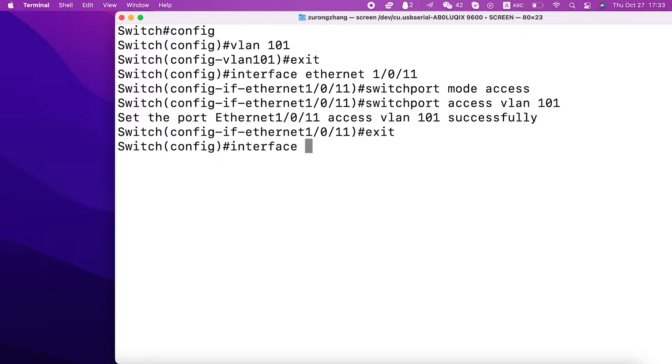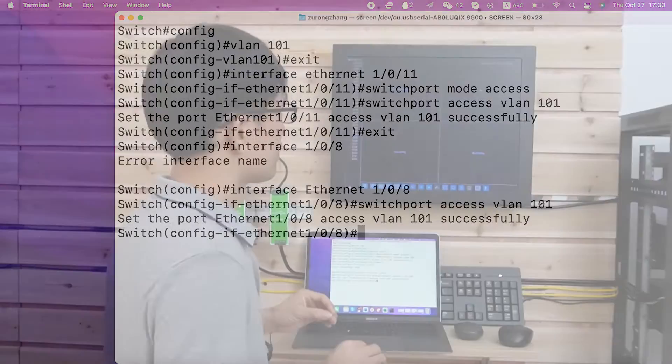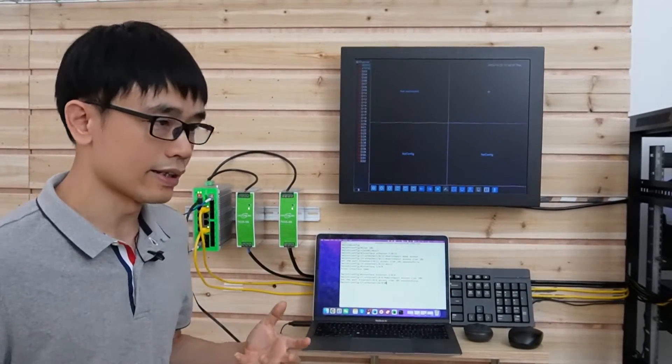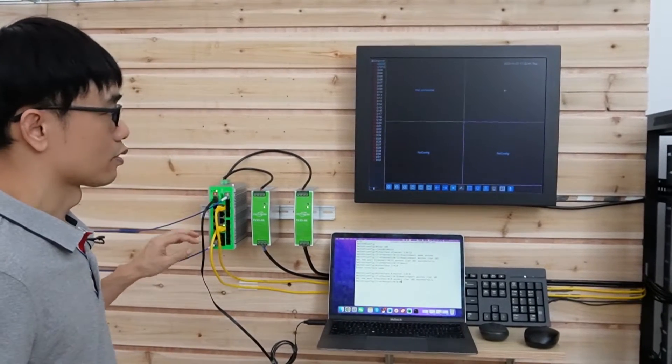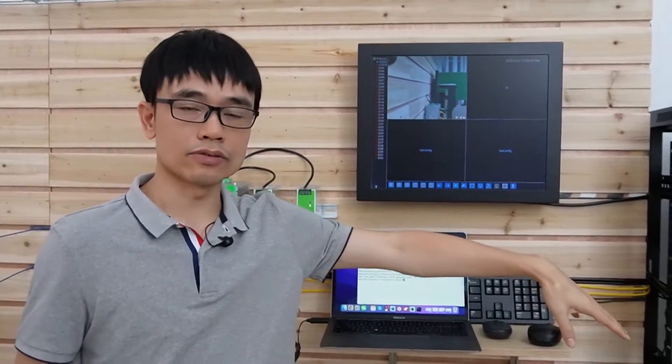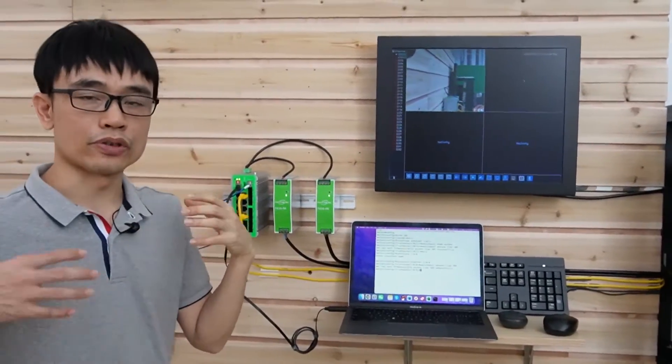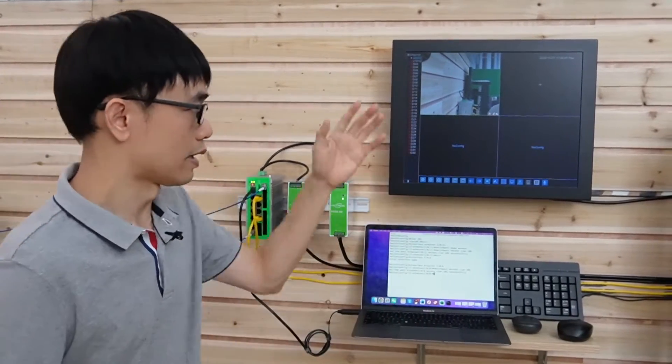I also need to configure the port belonging to the NVR to VLAN 101. Okay, now let's just wait for a while. What I have done is first, I made the input port belong to VLAN 101. Now I also make the output port, the port linking to the network video recorder, also belong to VLAN 101. So at this moment, both the input and output belong to VLAN 101. So we can see the live video again.